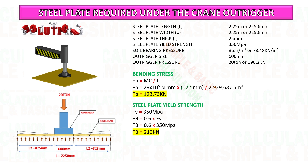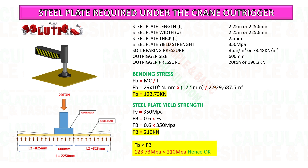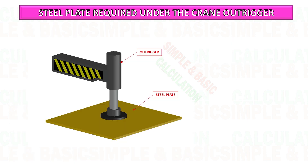The bending stress is less than the steel plate yield strength. Hence, this is okay. The steel plate is able to spread the load to the ground.